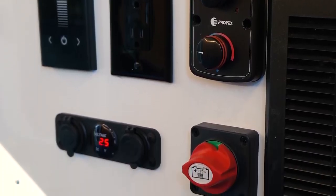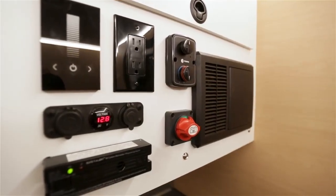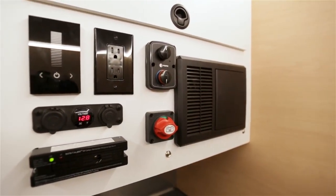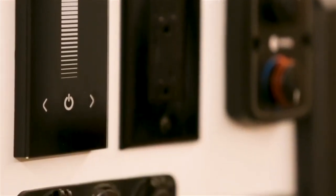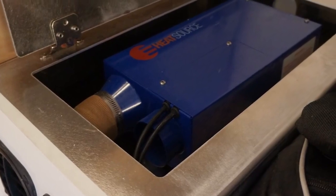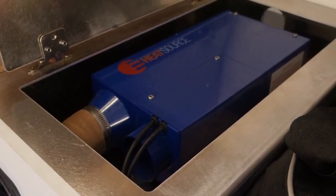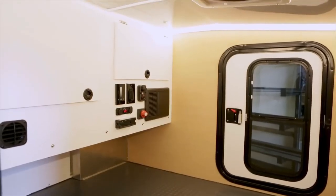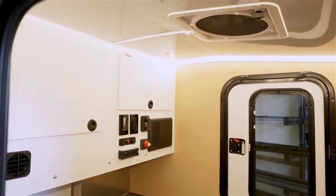Inside you have your control panel, got your master switch, it also has USB ports, 12 volt ports, 110 plug-ins, thermostat for your 6500 BTU forced air furnace. You have wraparound LED lighting in here all on a dimmer switch.